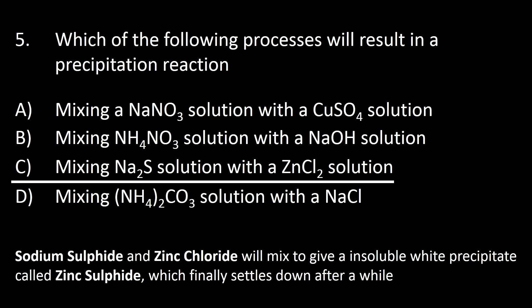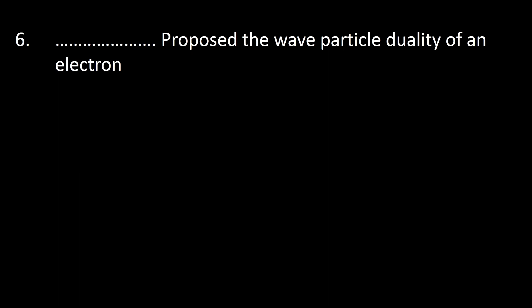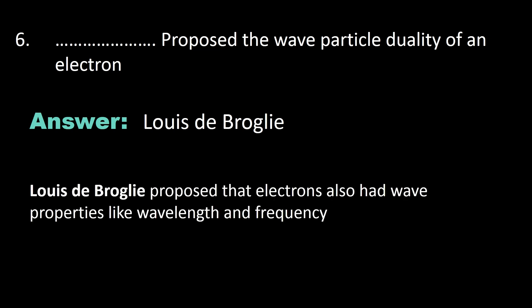Number six: who proposed the wave-particle duality of an electron? The answer is de Broglie. De Broglie proposed that electrons also had wave properties like wavelength and frequency.